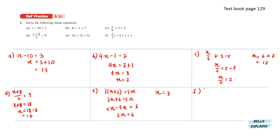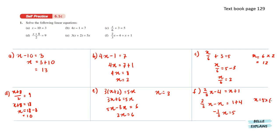And lastly for f, 2 over 3x minus 4 equals x plus 1. Gathering the x terms to one side gives us 2 over 3x minus x equals 1 plus 4, so negative 1 over 3x equals 5. Therefore x equals 5 times negative 3, which gives us negative 15.